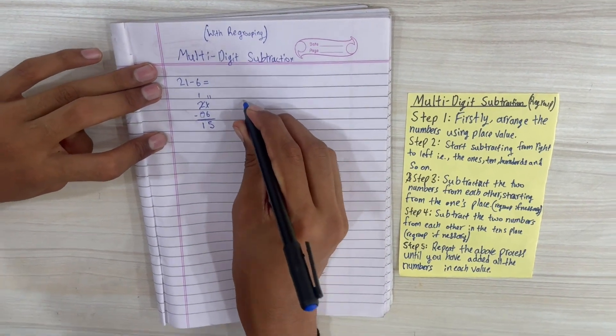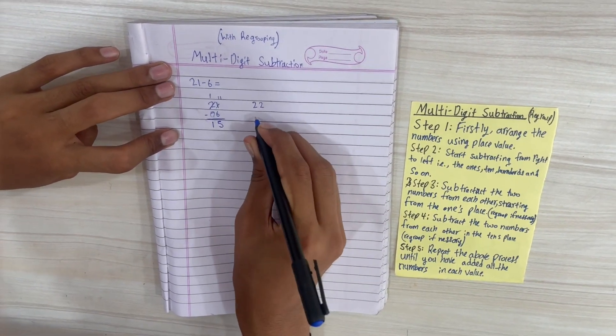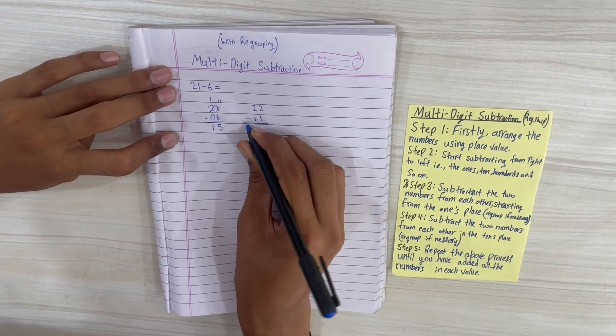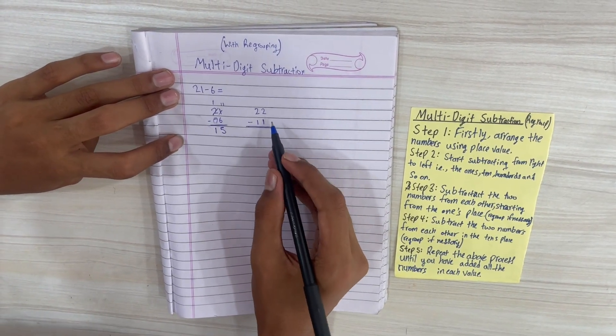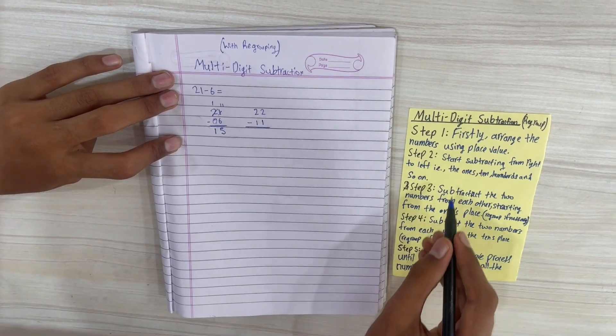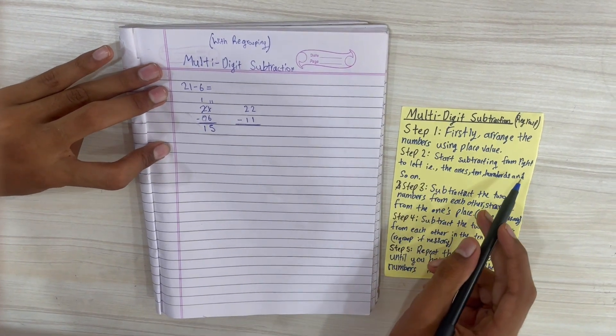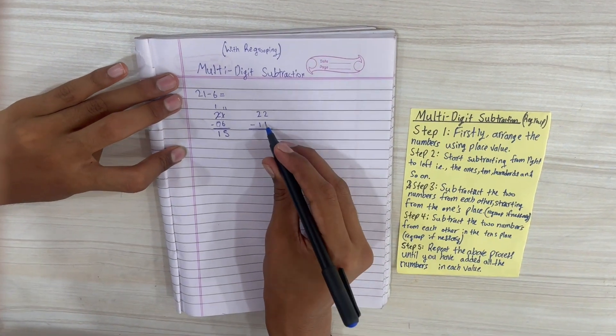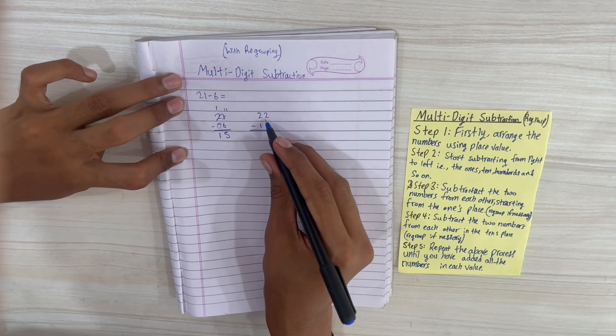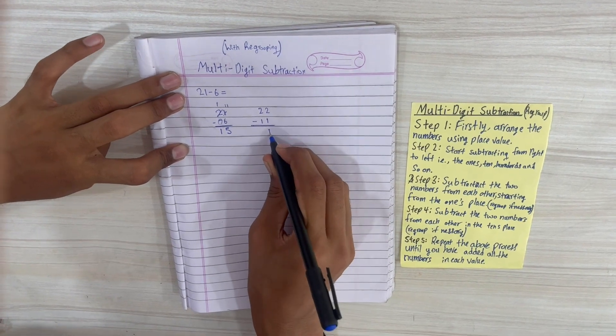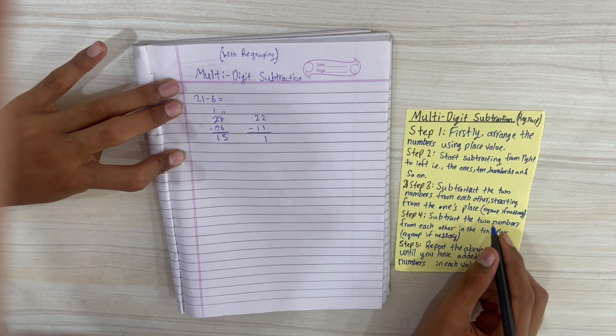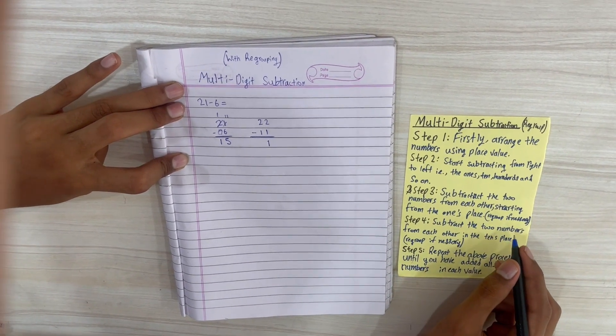Now we'll try a question without regrouping. We arrange the digits in order. Now we'll start subtracting from the right to left—the ones, tens, and hundreds, and so on. 12 minus 1 is 11. Now subtract the two numbers from each other starting from the ones place. We should regroup if necessary—it's not necessary now.